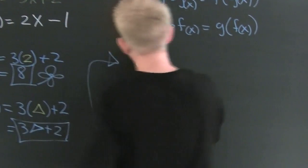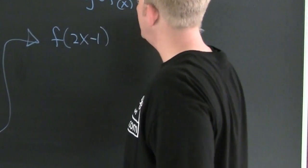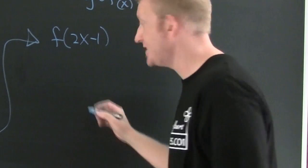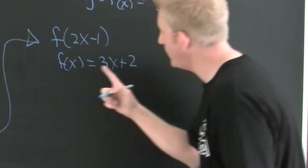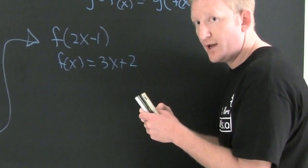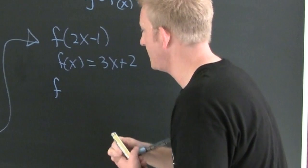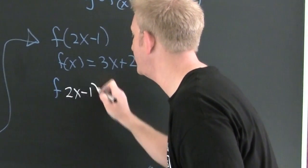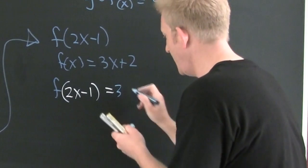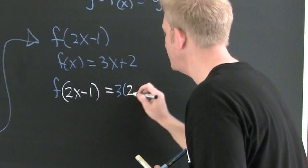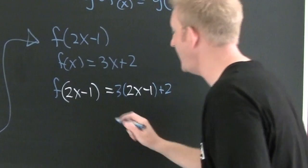Now what do I want to do? I want to look at what is f of 2x minus 1. Let me remind you that f of x was 3x plus 2. So now everywhere I see an x, I'm gonna put a 2x minus 1. So then f of 2x minus 1 is gonna be equal to 3 times 2x minus 1 plus 2.